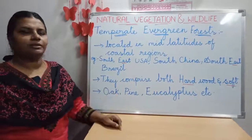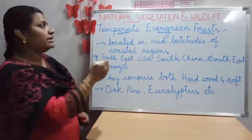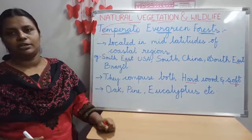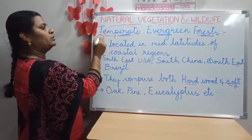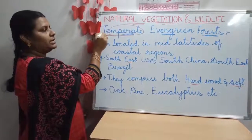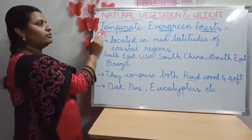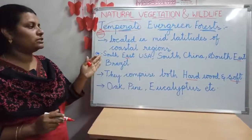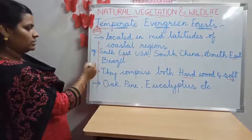Now we come to temperate evergreen forests. These are also evergreen forests but they lie in the temperate region. These forests are located in the mid latitudes — around 30 to 45 degrees latitude. You can also find this kind of forest in the margins of the coastal regions — the sides of coastal areas.